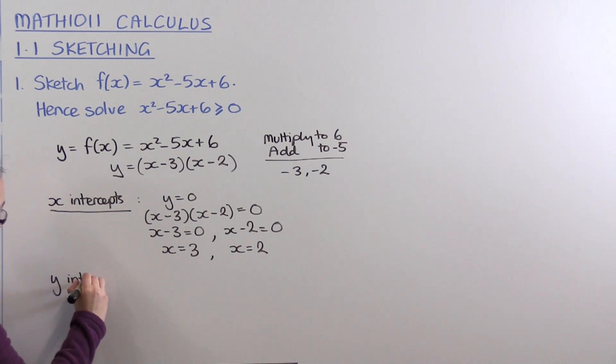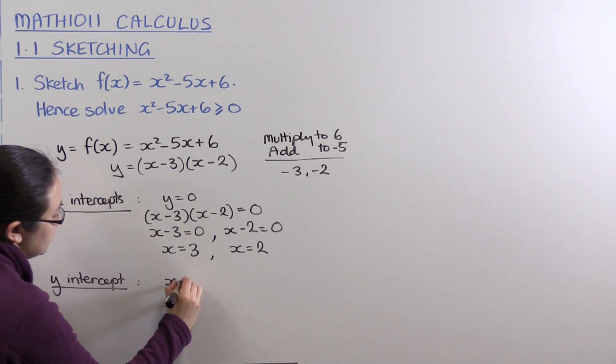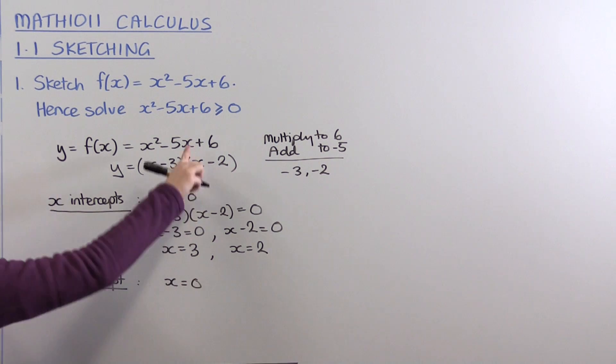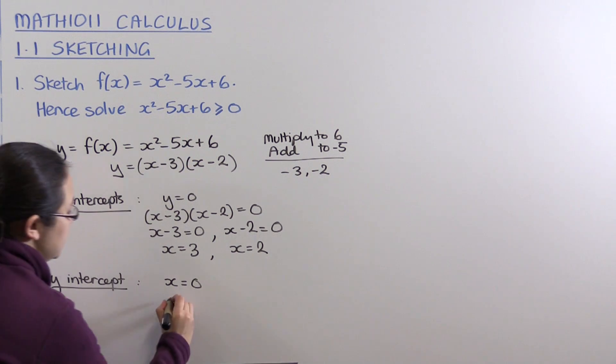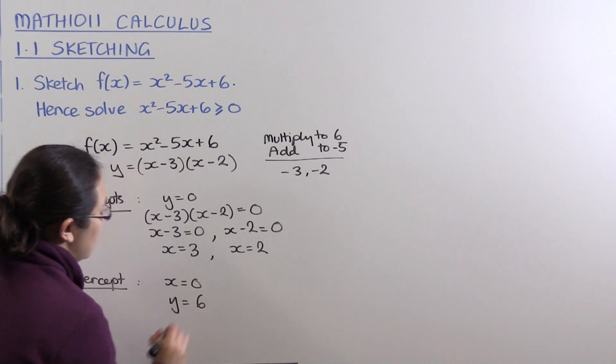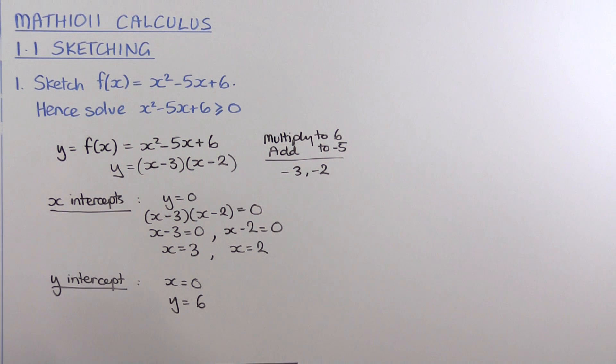For the y-intercept, we set x = 0. Substituting x = 0 into the equation, we get y = 6. So we have our x-intercepts and y-intercept. We know the shape is going to be a parabola.